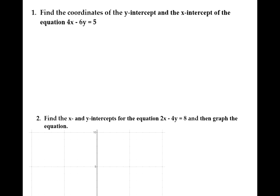Find the coordinates of the y-intercept and the x-intercept of the equation 4x minus 6y equals 5. In my previous video, I defined intercept as any point or ordered pair that contains the number 0. The y-intercept is the ordered pair when x is equal to 0, and the x-intercept is the ordered pair when y is equal to 0.